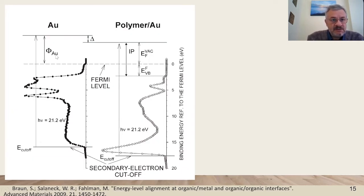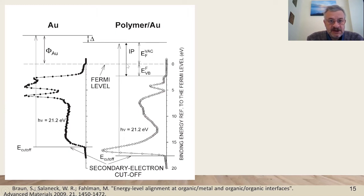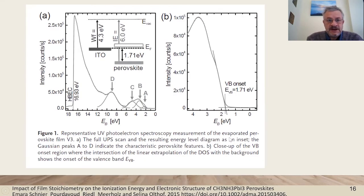Here we see a sample of a real measurement: first the gold, and then a polymer on top of it. We can see the displacement of the secondary electron cutoff. This means a dipole has been formed at the interface, and we can track the ionization energy. This is the onset of the valence band of the polymer. Here there is emission of electrons at the Fermi level, but here it is not, because this is the gap of the polymer. So we can find the ionization potential and also the work function of the semiconductor. Here is the measurement of a perovskite — the full characteristic of emission from the onset to the secondary electron cutoff.